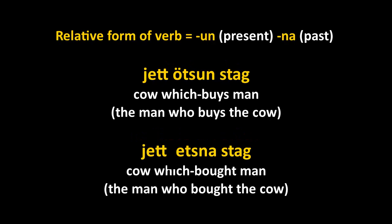In Chechen there is no proper relative clause. To say 'the man who buys cows,' you have to say 'the cow-buying man' — yet ertsunstag. You use the relative form of the verb, which is -un in the present and -na in the past. So yet ertsunstag is 'the man who buys cows,' and in the past it would be 'the man who bought a cow.' That's a different strategy from what we typically use in relative sentences.